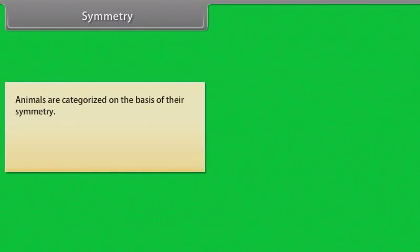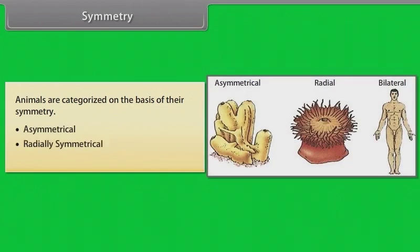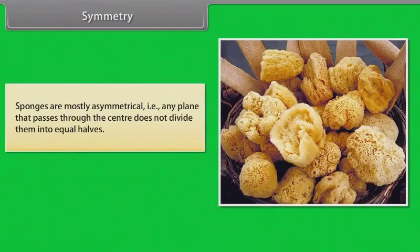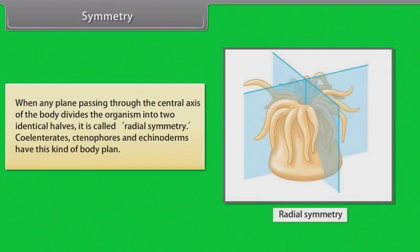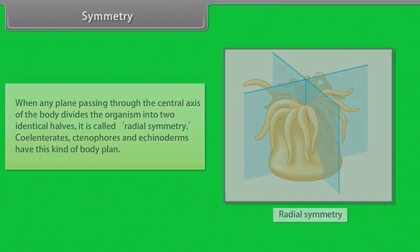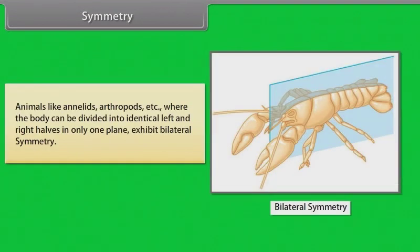Animals are categorized on the basis of their symmetry: asymmetrical, radially symmetrical, or bilaterally symmetrical. Sponges are mostly asymmetrical — any plane through the center does not divide them into equal halves. When any plane through the central axis divides the organism into two identical halves, it is called radial symmetry. Coelenterates, Ctenophores and Echinoderms have this body plan. Animals like annelids and arthropods, where the body can be divided into identical left and right halves in only one plane, exhibit bilateral symmetry.